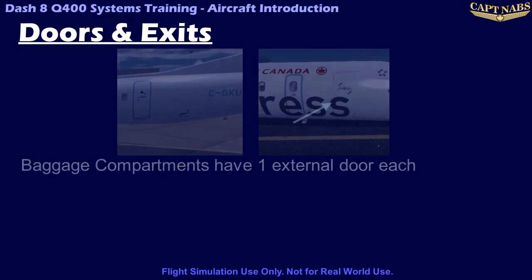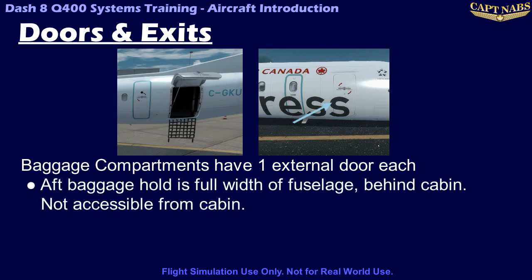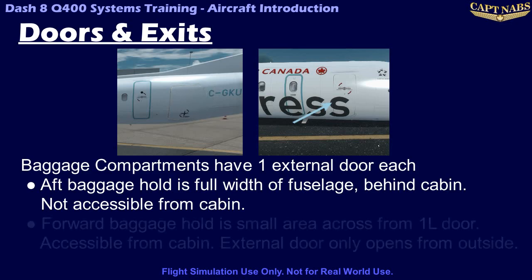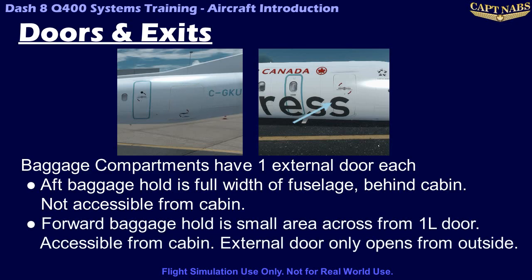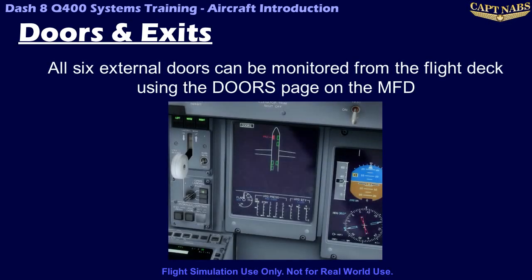The baggage compartments each have one external door that can only be opened from the outside. The aft baggage hold is the full width of the fuselage behind the cabin and is the primary baggage hold — it is not accessible from the passenger cabin. The forward baggage hold is a small closet area at the front of the cabin across from the 1L door. All six cabin and external baggage doors can be monitored from the flight deck using the doors page of the MFD. Red indicates an open door; green indicates closed and locked.